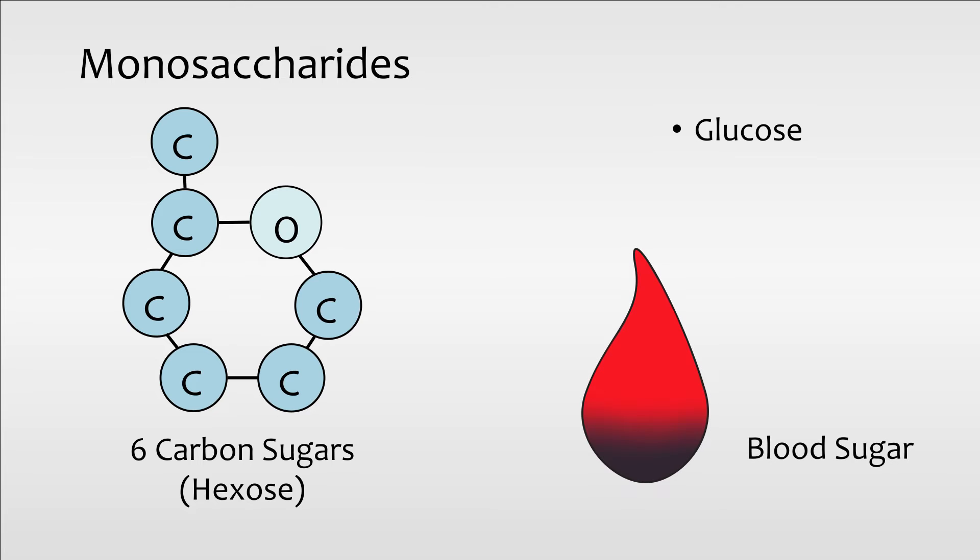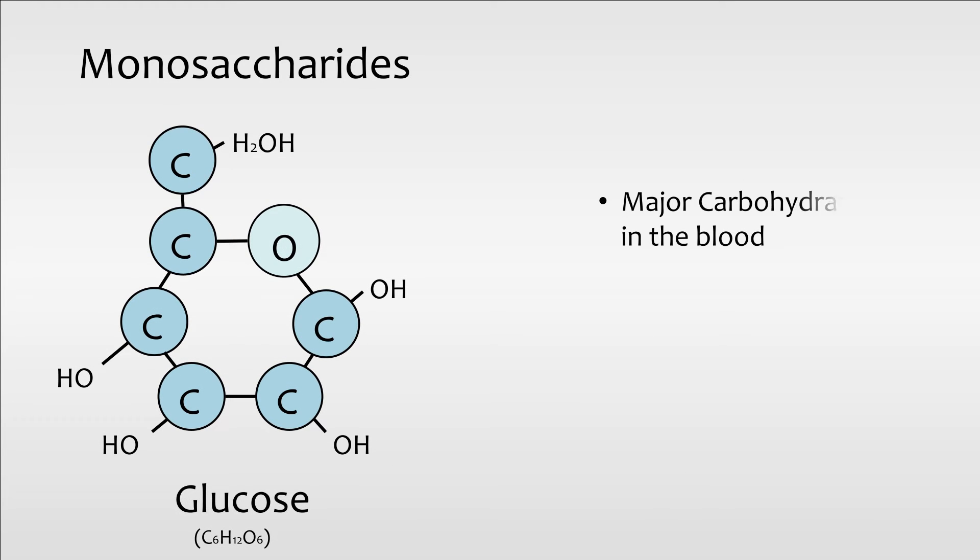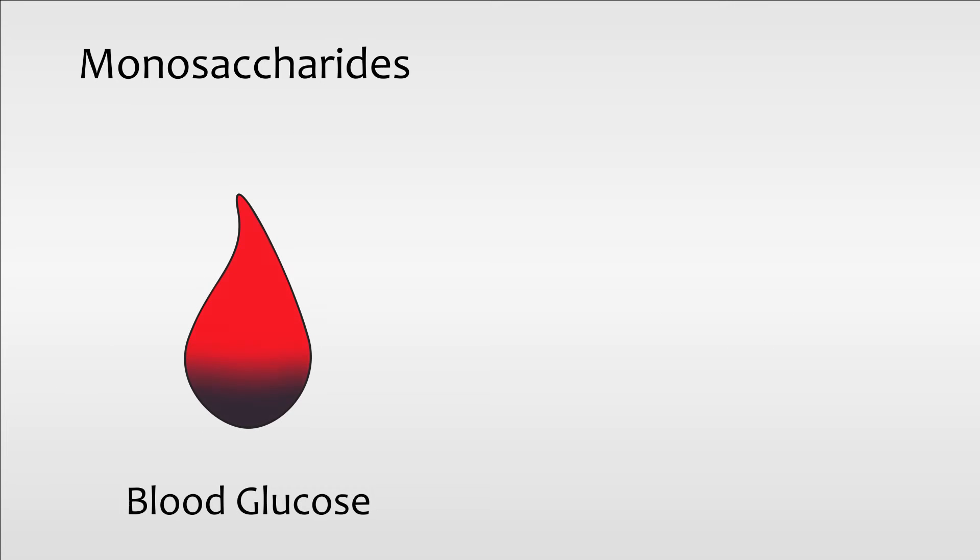One of the monosaccharides, glucose, is also known as blood sugar. Glucose is the major carbohydrate in our blood and the major nutrient for most cells of our body. Our blood glucose levels are tightly regulated by insulin and other hormones. It is important that our blood glucose levels are constantly at an adequate level to prevent potential damaging effects.